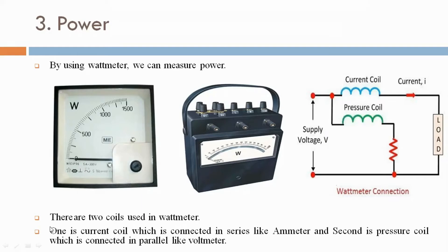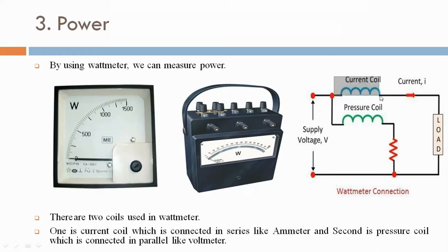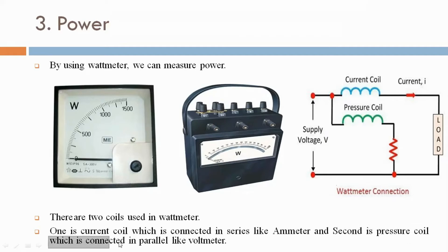One is the current coil, which is connected in series, similar to an ammeter. The second is the pressure coil, which is connected in parallel, similar to a voltmeter — connected in parallel with the supply.